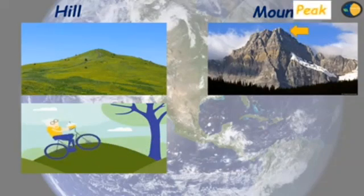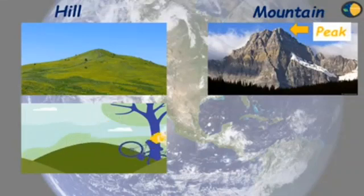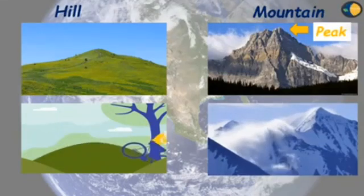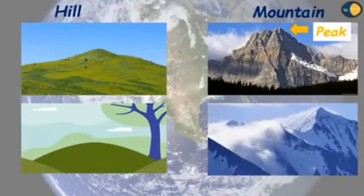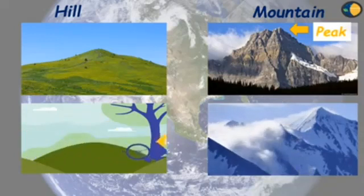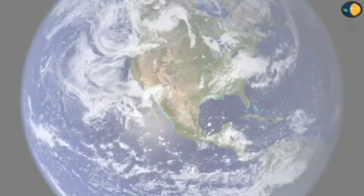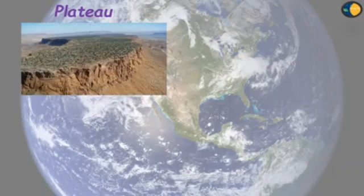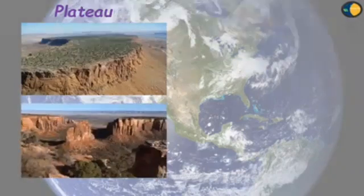Next we have plateau. A plain on a hill or mountain is called a plateau. The plateau looks like a table, so it is also called tableland. Next is desert. A very large area of land covered with sand is called a desert.